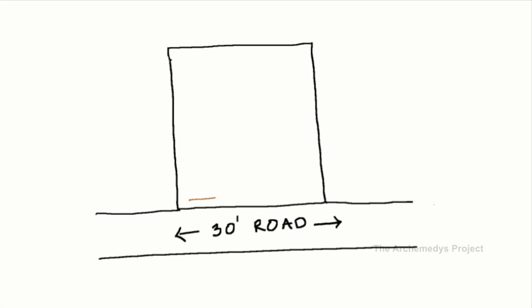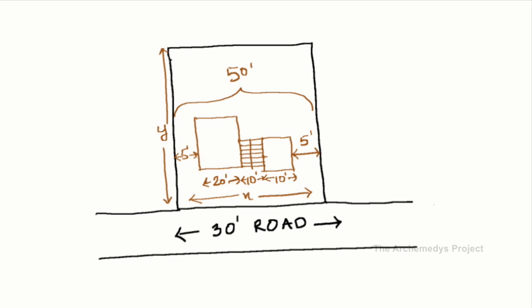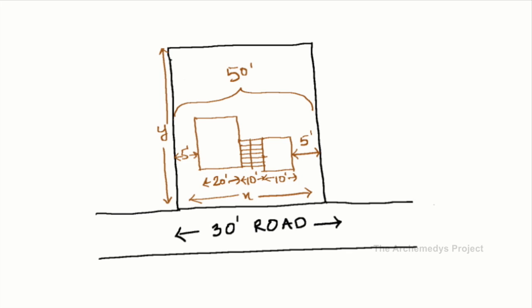The plot is most preferred if its width accommodates minimum of two rooms and a staircase after leaving the setbacks. As a thumb rule, the length to breadth of your plot is good if it falls in the ratio of 1 to 1.618, which is often called the golden proportion universally. Once you're done with the site selection, it's the right time to meet an architect who will help you with the rest of the construction process.